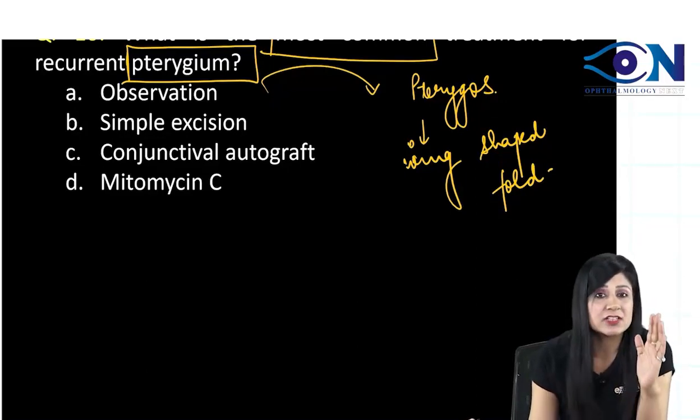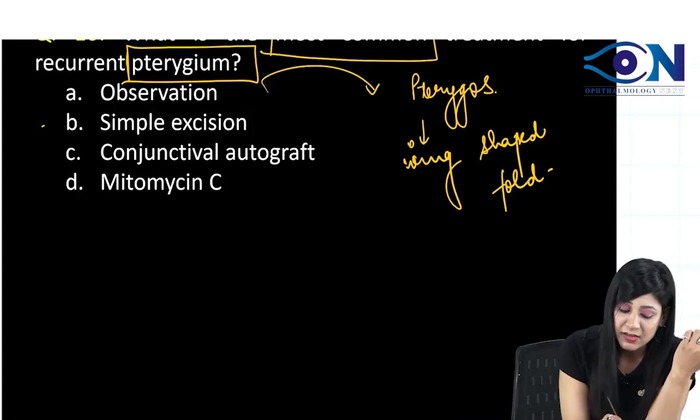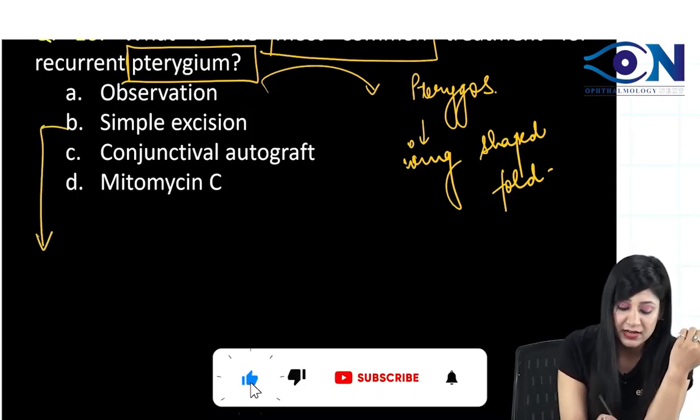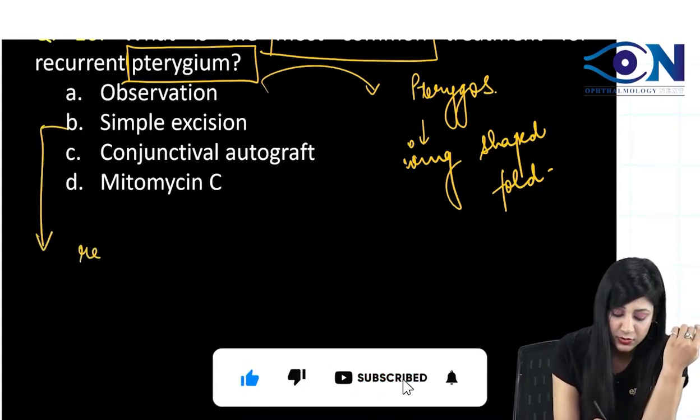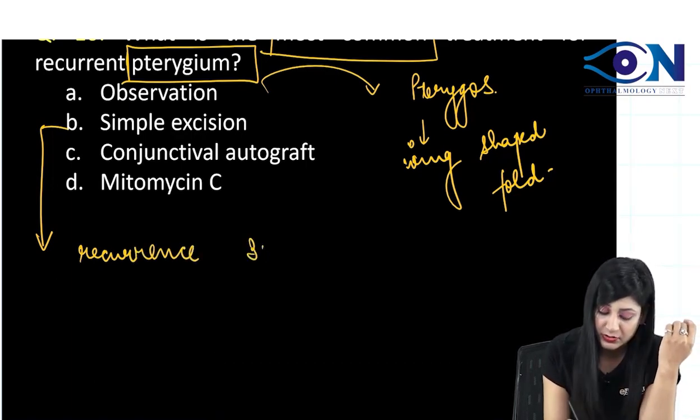It is a wing shaped fold of the conjunctiva which is encroaching over the cornea, and if I am giving the simple excision, we can have the recurrence. Here we can have the recurrence in about 30 to 80 percent of the cases.